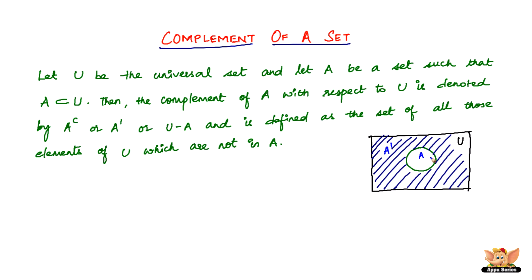The complement of A with respect to U is denoted by A raised to C, or A dash, or U minus A. When you see the term U minus A, you pretty much understand what the complement of set A is, because in the previous video we saw the difference of sets — A minus B and B minus A. So U minus A means all the elements that belong to U but not to A.